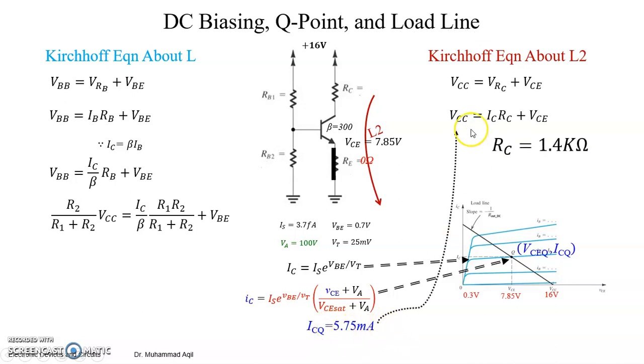That's the success! Now we can put here the value of IC. We already have VCE 7.85, we already have VCC 16. We just found IC, so after putting all this value here we actually found the value of RC as 1.4 kilo ohm.